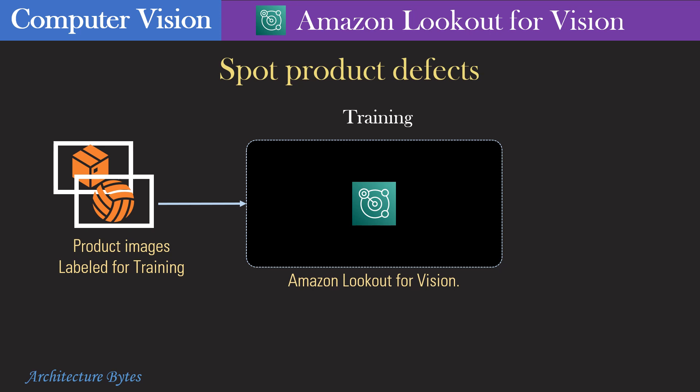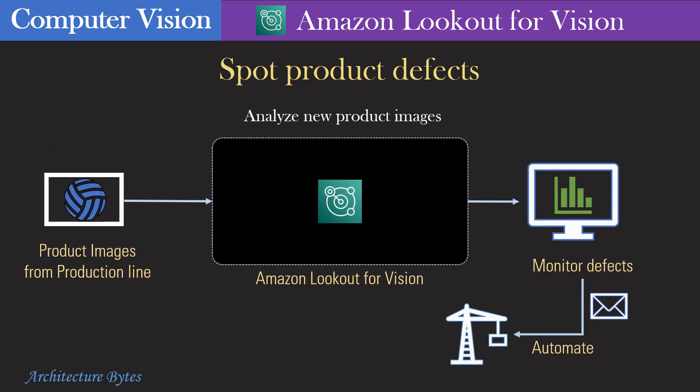You do not need to have AI or machine learning expertise to do this. Once it is ready, you can start ingesting it with finished product images from the production line and it will identify product defects in real time, thus reducing operational costs of visual inspection.